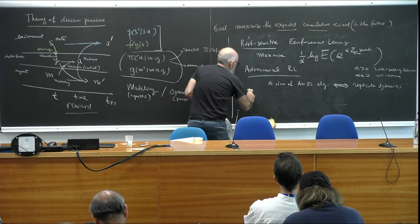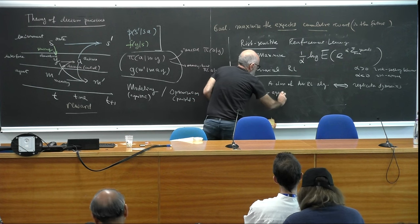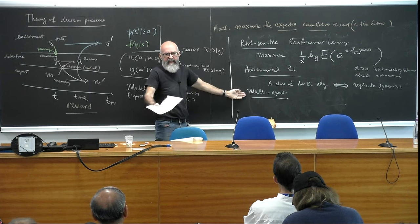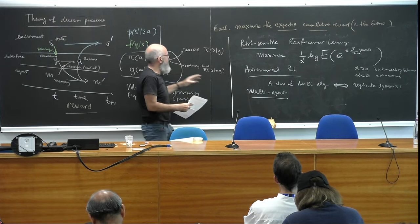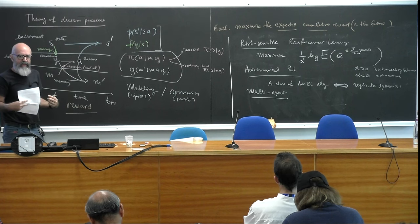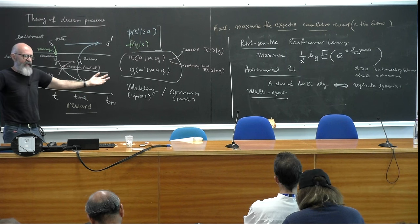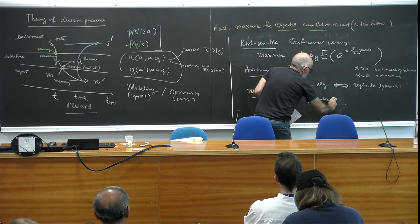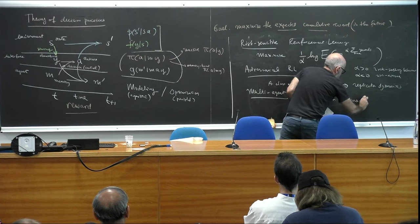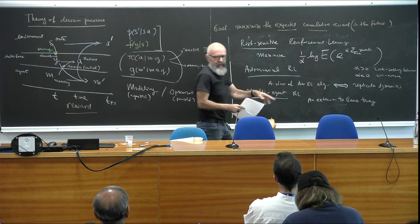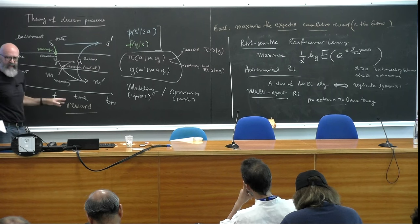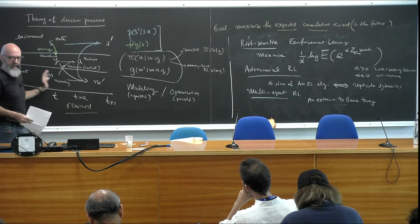Third extension: multi-agent reinforcement learning. This extends the single-agent-vs-environment game to a game against or with other agents — cooperative or non-cooperative. Each agent has its own reward function depending on the environment and what other agents do. Multi-agent RL is an extension to game theory — you can provably show that a subclass of these multi-agent problems gives you the setting of game theory, state-dependent game theory, and repeated games when you incorporate memory.